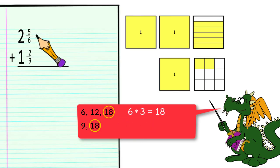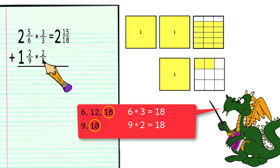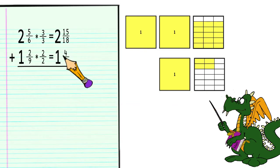6 times 3 is 18. So, we will multiply 5 6ths by 3 over 3, getting 15 18ths. And 9 times 2 is 18. So, we will multiply 2 9ths by 2 over 2, getting 4 18ths.